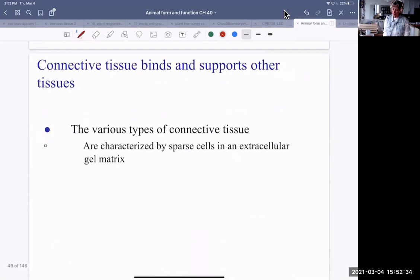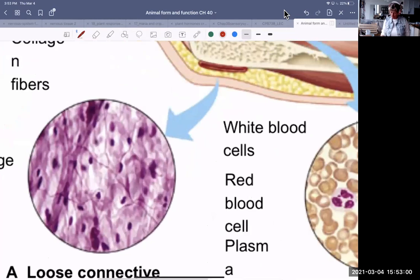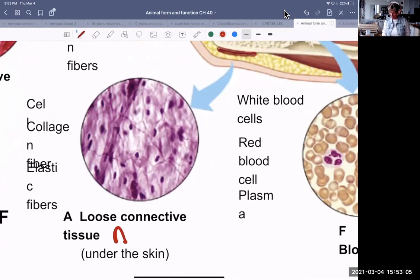Connective tissue binds and supports. So that was all epithelial tissue. Let's move on to connective. It's different. So epithelial tissue is tightly packed. Connective tissue, for the most part, is not. Sparse cells in a matrix that the cells excrete. Binds and supports. So we've seen one already. Loose connective tissue. It's also known as areolar tissue.